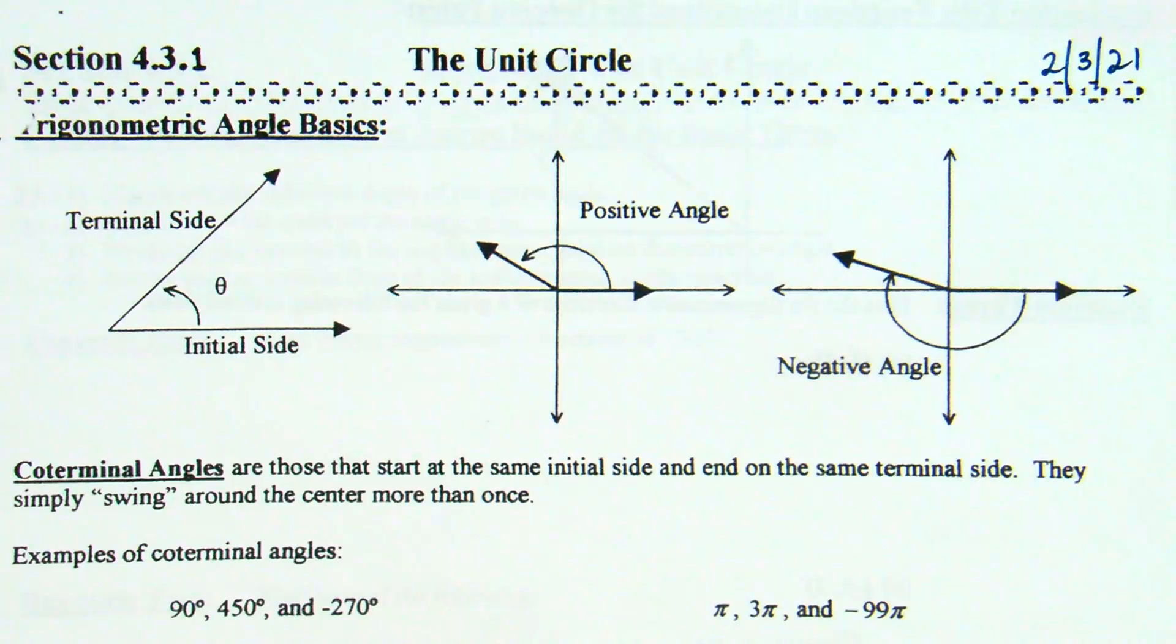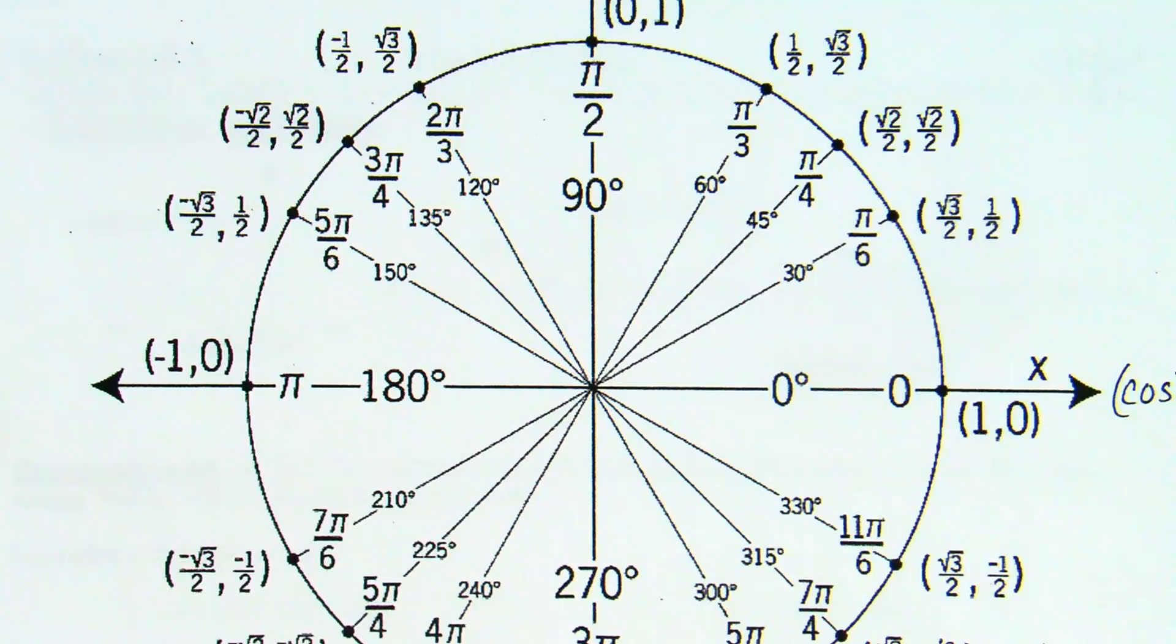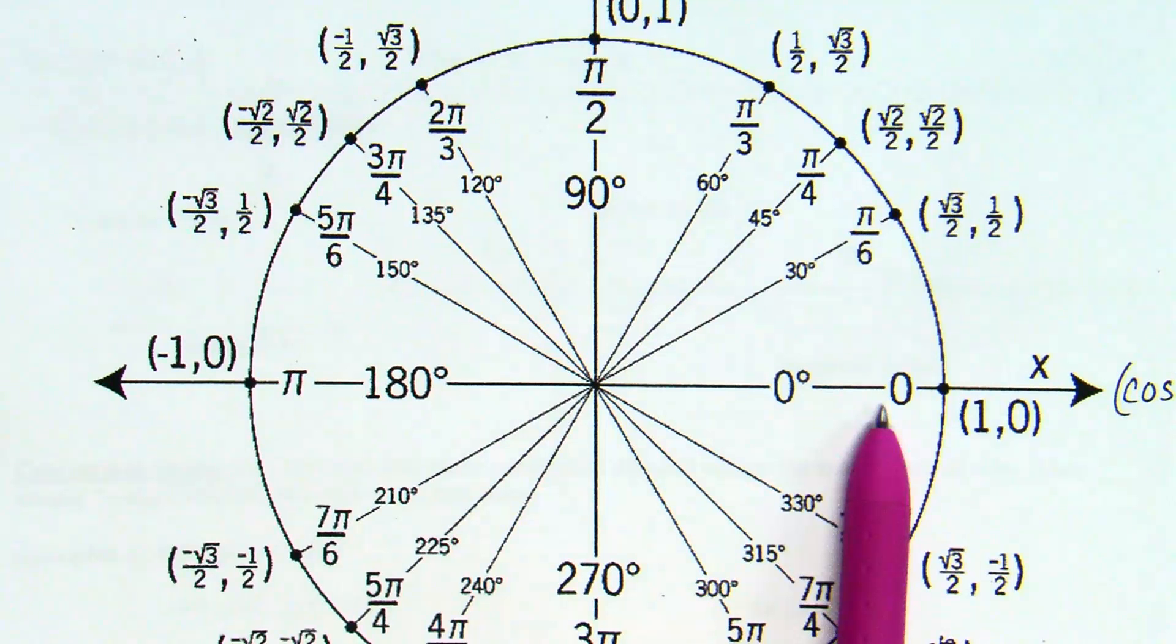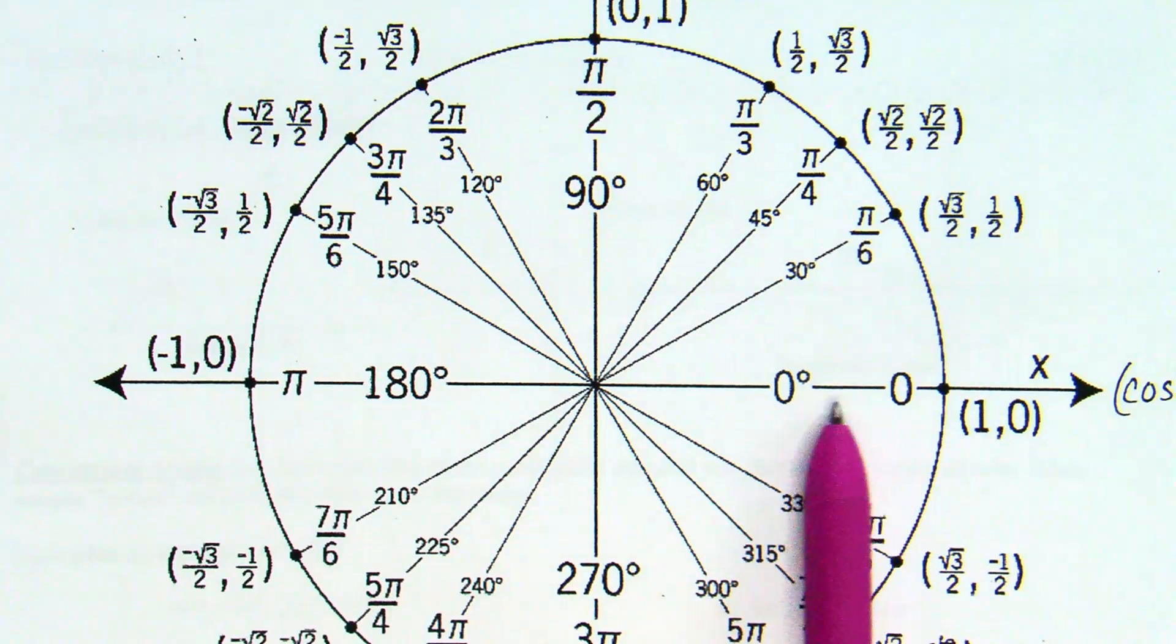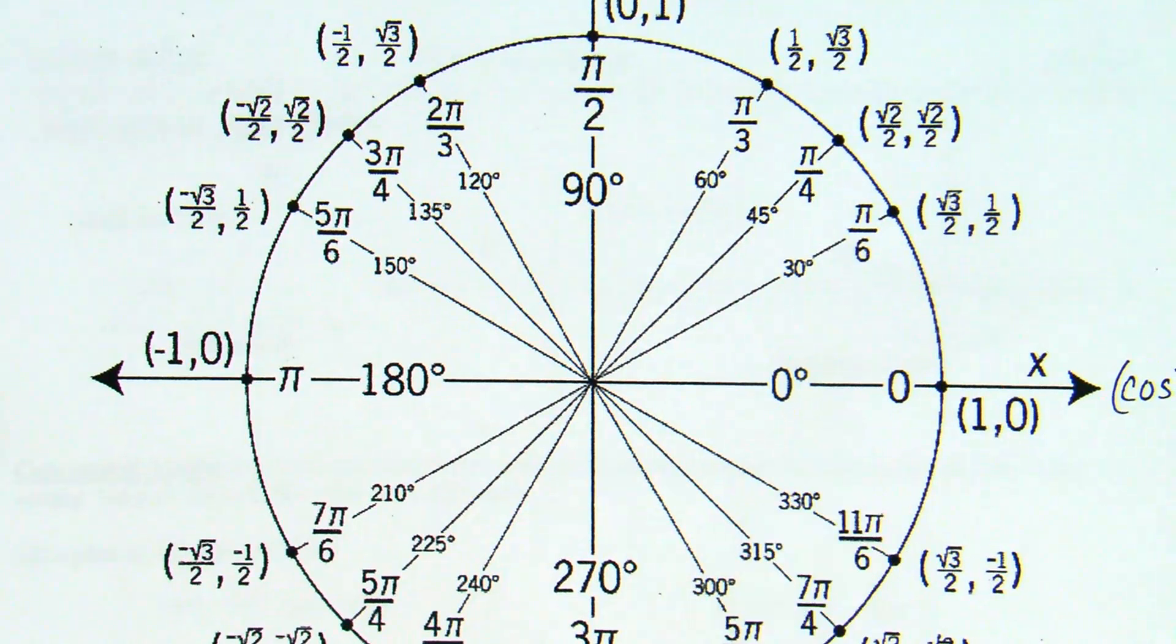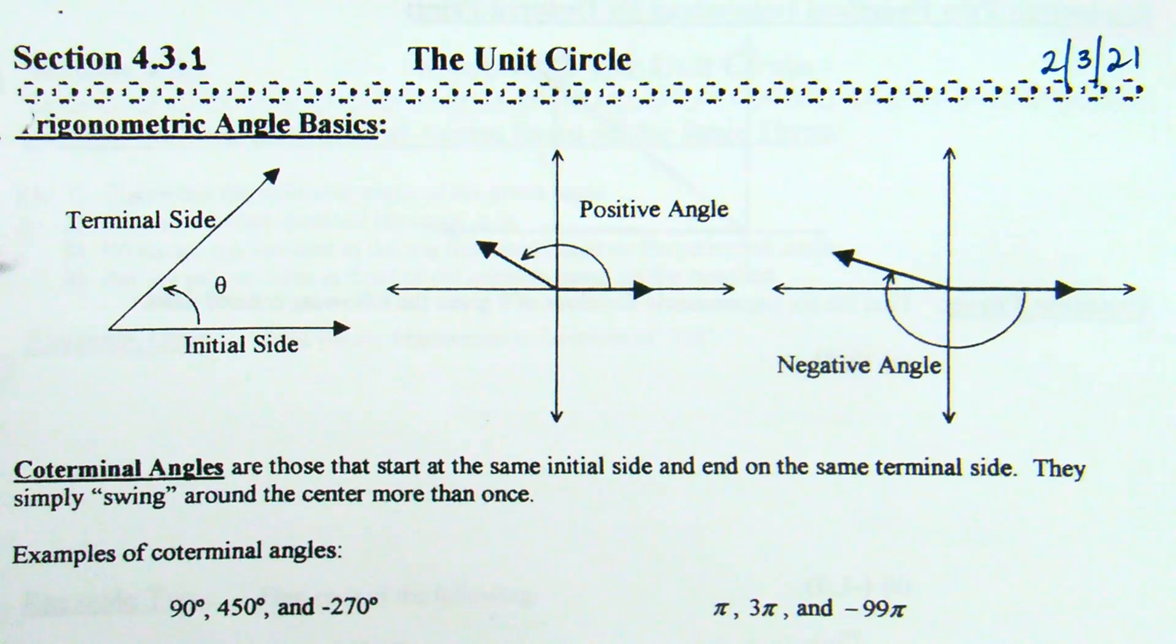Where does our unit circle start? I'm going to put this back up for a moment so I have something to point at. Where's my zero, so to speak? It's over here at the right. If I say 3 o'clock, does that make sense? It's at 3 o'clock. So you have to realize on the unit circle our starting point is always 3 o'clock. That is our basis of zero. That is our reference point there.